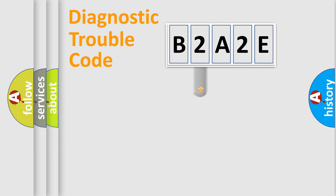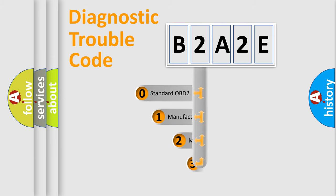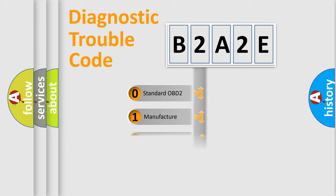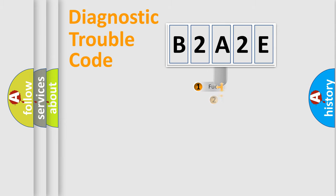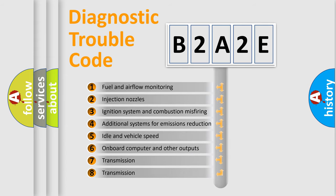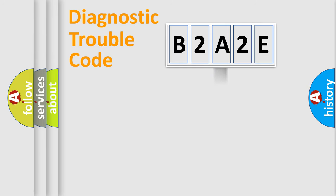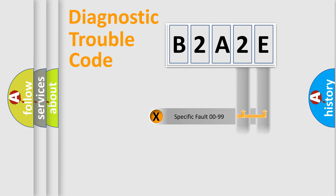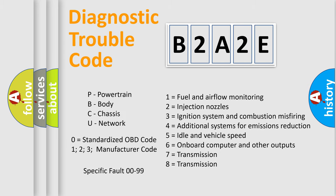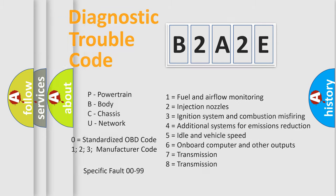This distribution is defined in the first character of the code. If the second character is expressed as zero, it is a standardized error. In the case of numbers 1, 2, or 3, it is a more specific car-manufacturer expression. The third character specifies a subset of errors. This division is valid only for the standardized DTC code, and only the last two characters define the specific fault of the group. Such a division is valid only if the second character is expressed by the number zero.